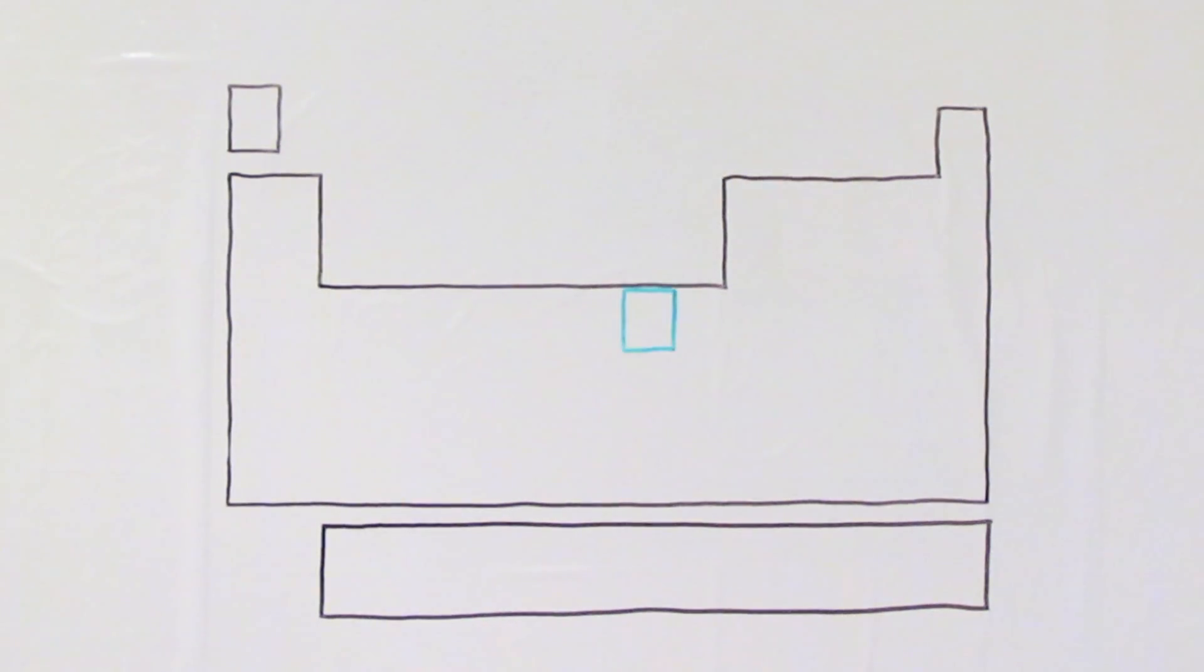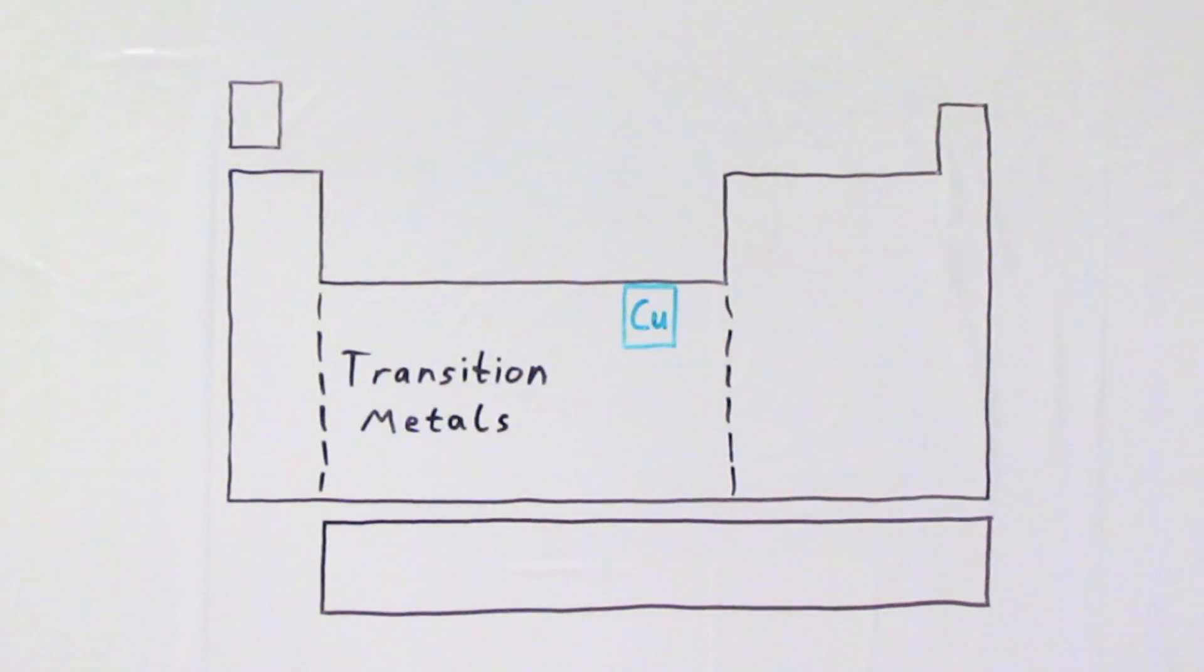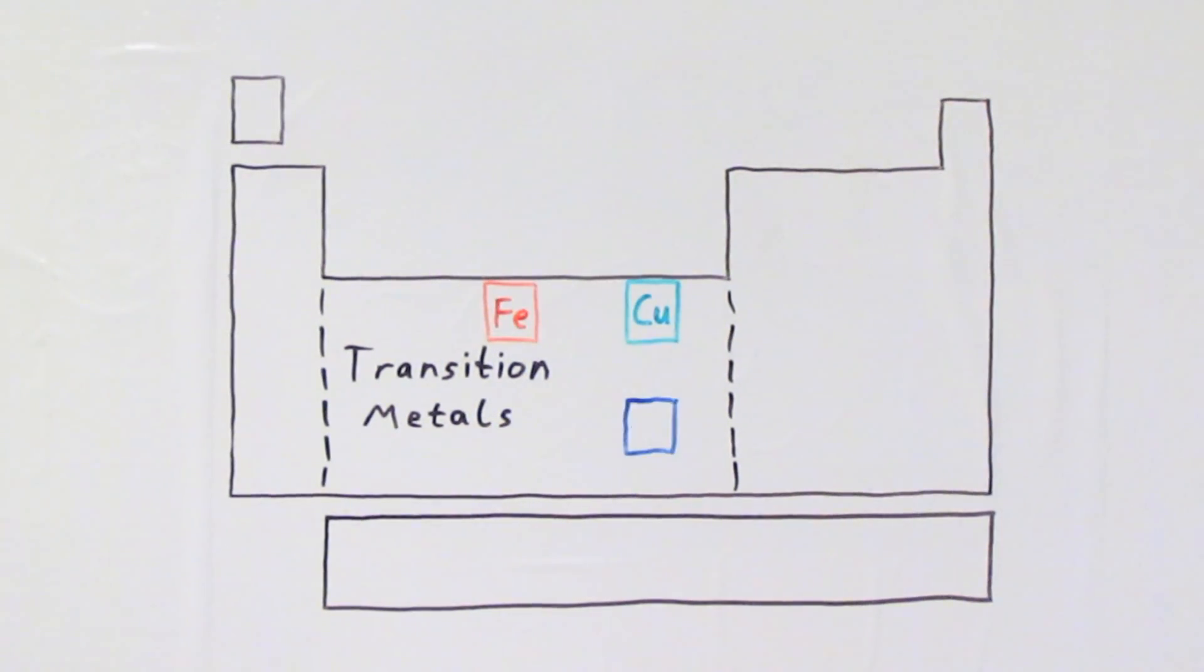Copper can be found just here in the periodic table and this entire midsection of metals are what we call the transition metals. The transition metals include a whole range of different elements with a range of different properties, things like iron and gold, but we're just going to focus on copper for this lesson.